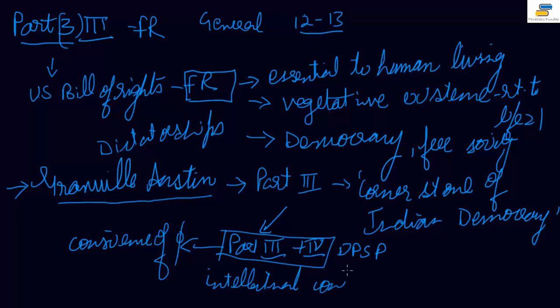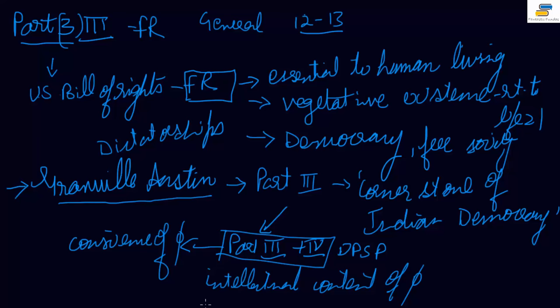Parts III and IV together give what is called the intellectual content of the Constitution. The rest of the Constitution is just procedural — how the president is elected, what is his salary, and so on. If you read any law book on the Constitution, you'll find that in a 1000-page book, perhaps 1000 pages would be on Part III alone. These are the fundamental rights.